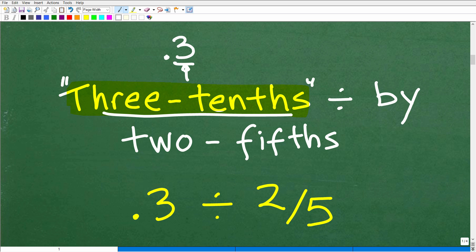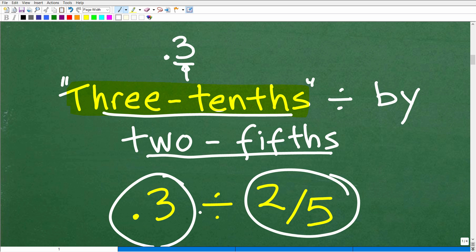And that's going to be divided by two-fifths. So two-fifths, you can write as a fraction 2 over 5. So we could think of this problem as 0.3 divided by 2/5 or 3/10 divided by 2/5. But again, if we're not using our calculator, we really want to work all in either decimals or all fractions.